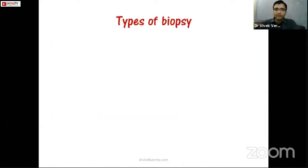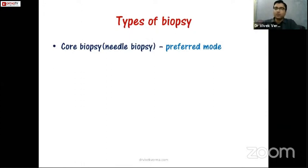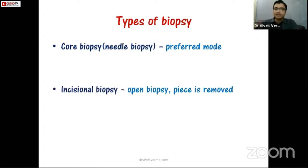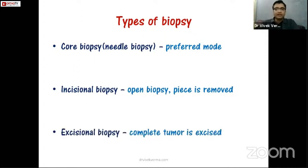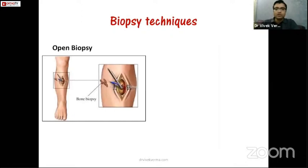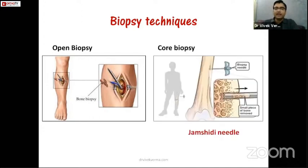There are broadly three types of biopsy: first, core biopsy or needle biopsy; second, incisional biopsy, which is an open biopsy where part of the tumor is removed; and third, excision biopsy where the tumor is taken out completely. Currently core biopsy — the needle biopsy — is the preferred mode, replacing the traditional open biopsy approach.